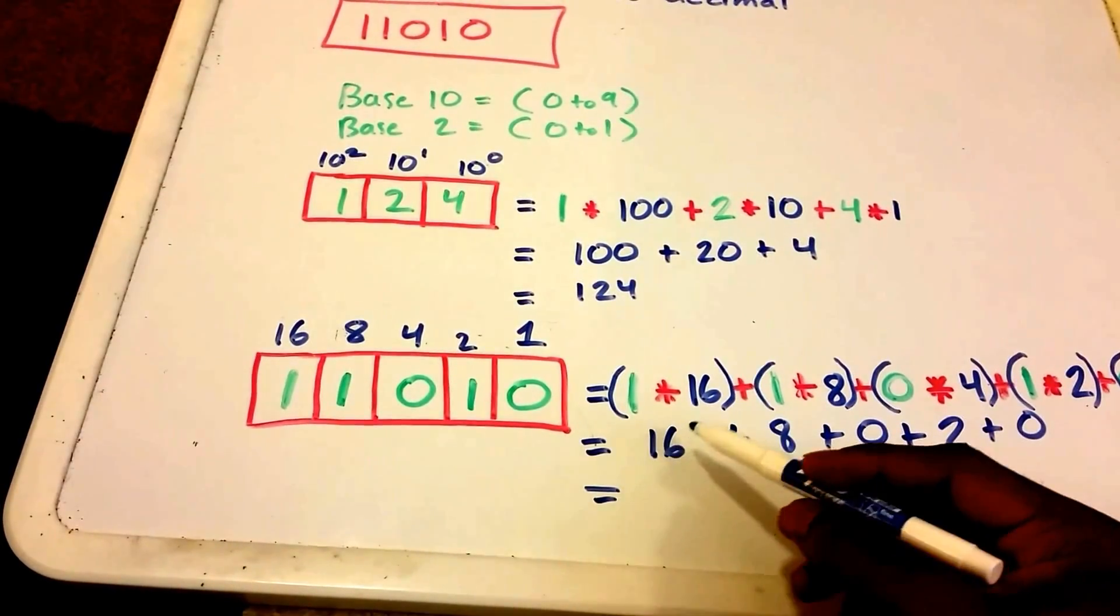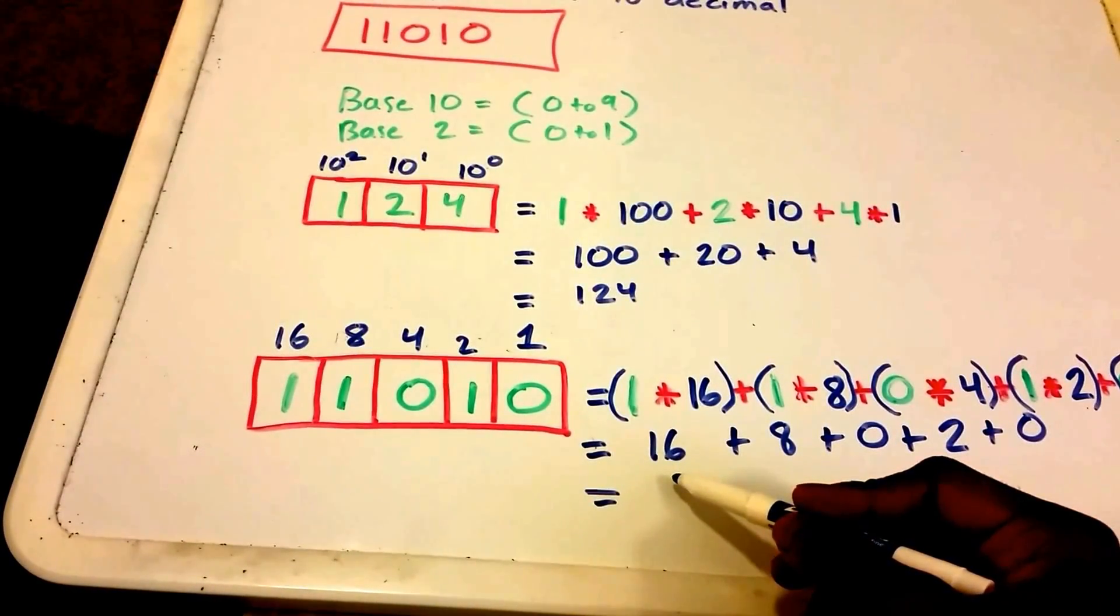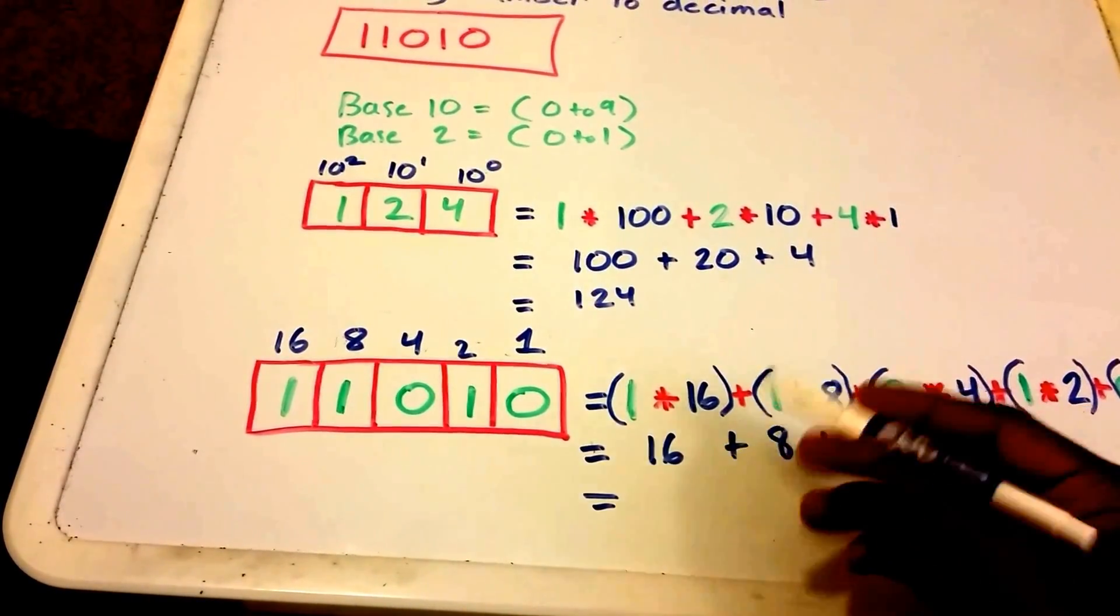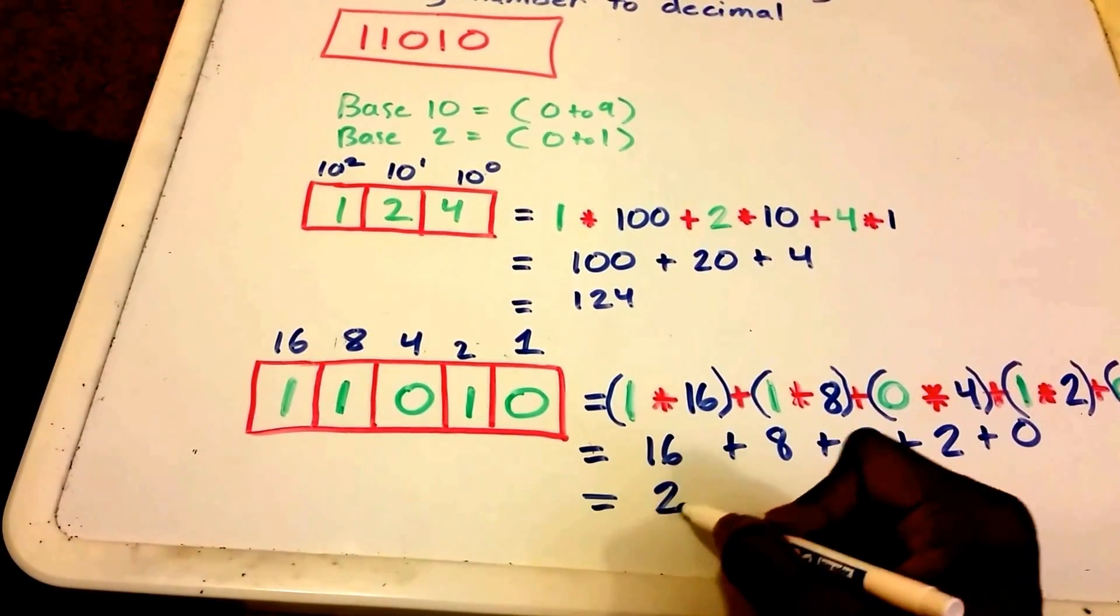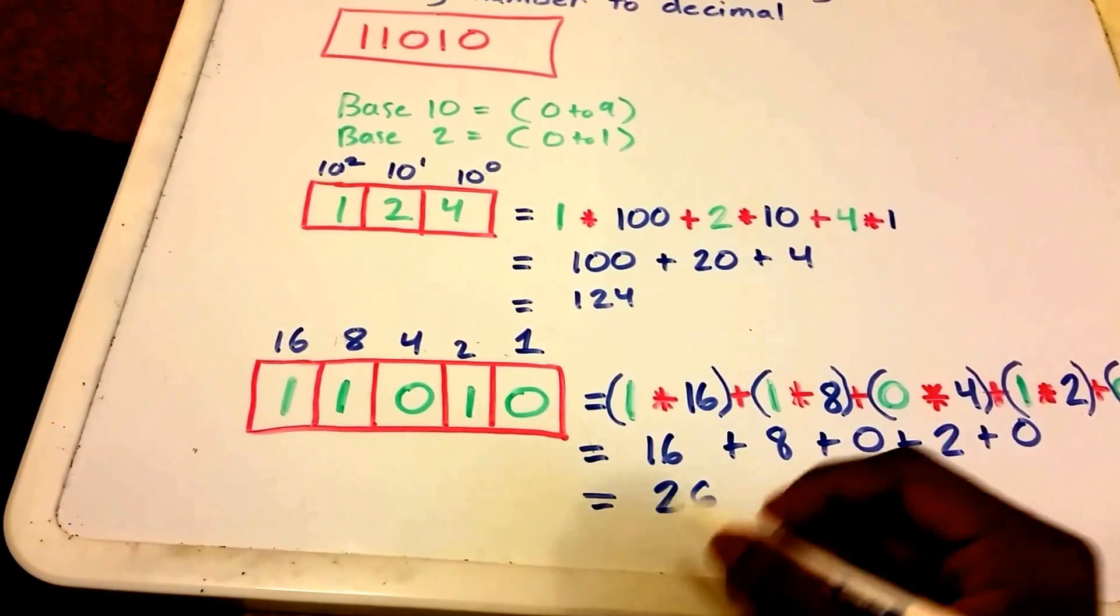So now I get, let's see, 16 plus 8 is 24, plus 2, so I get 26.